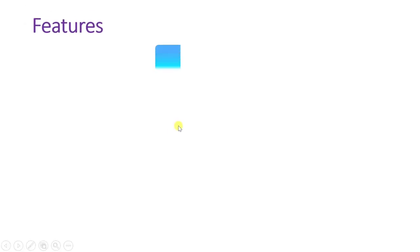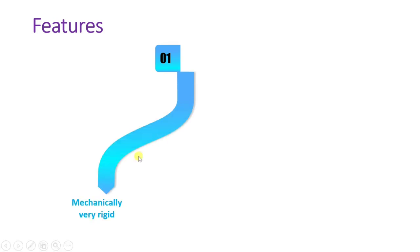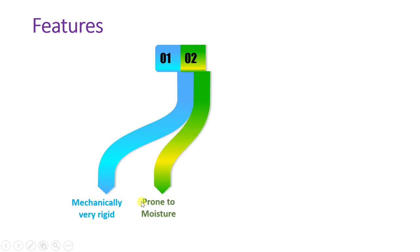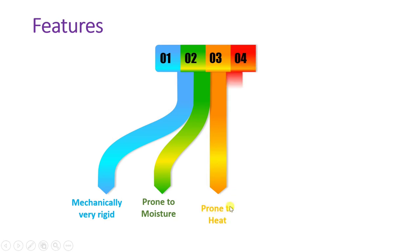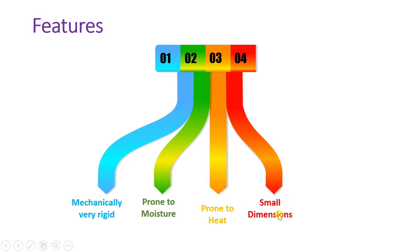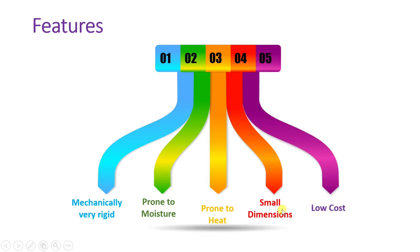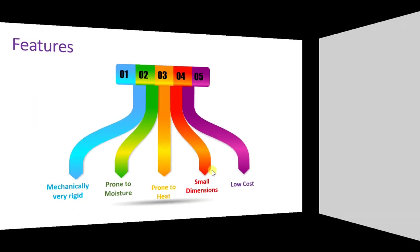Carbon microphone is usually utilized for low-cost applications. Let us see its features. First, mechanically it is very rigid. It is prone to moisture and also prone to heat. It has very small dimensions and it is of low cost. So it is mechanically rigid, prone to moisture and heat, has small dimensions, and is a very low-cost device, making it useful for low-cost applications.